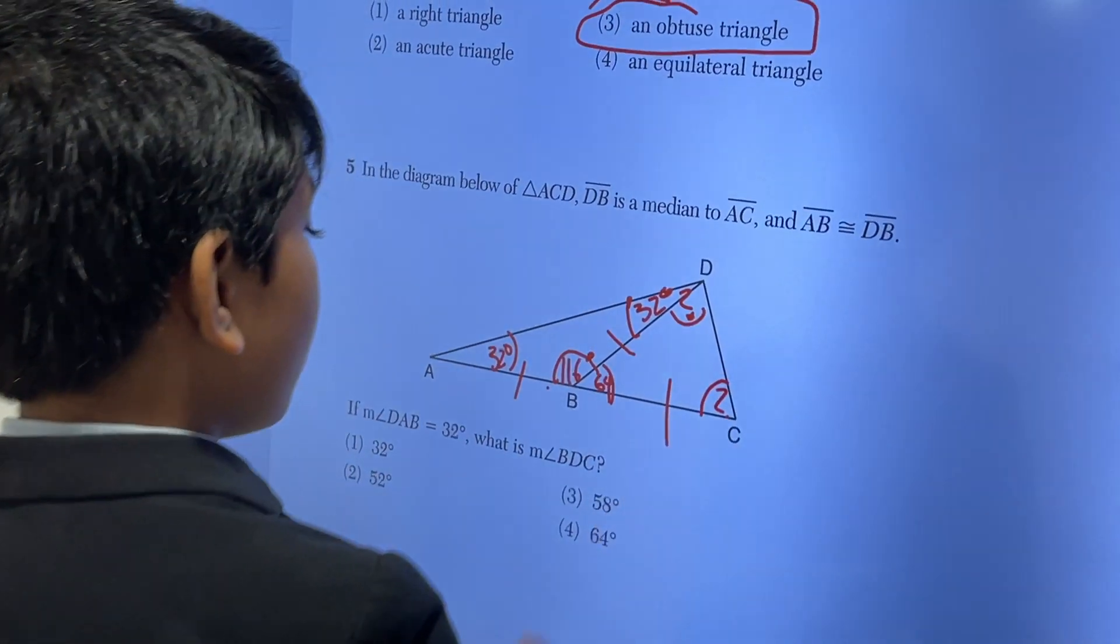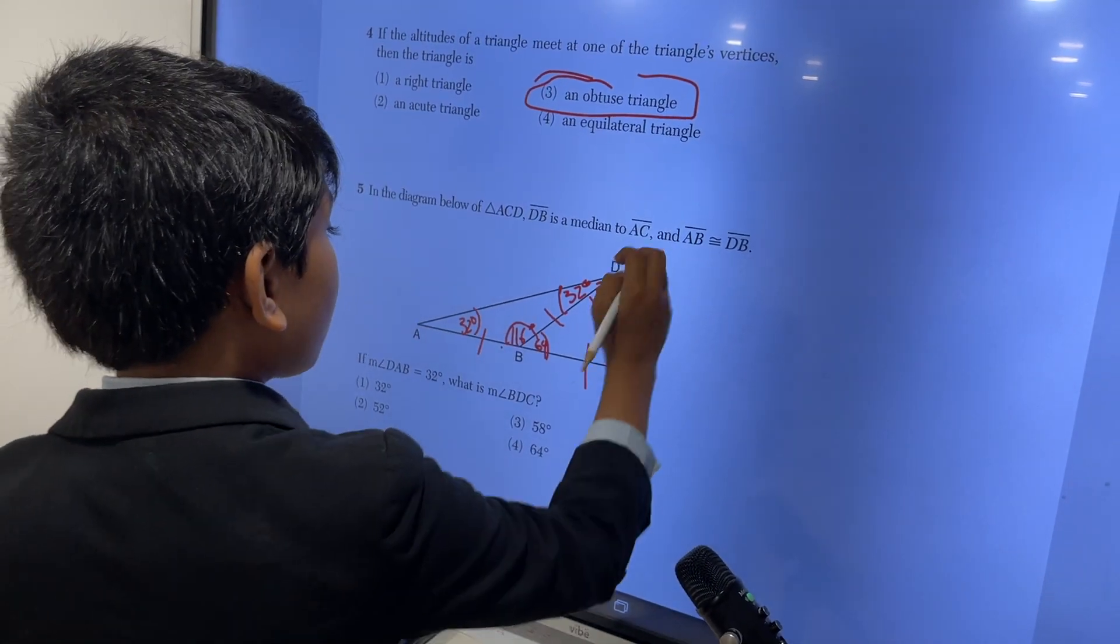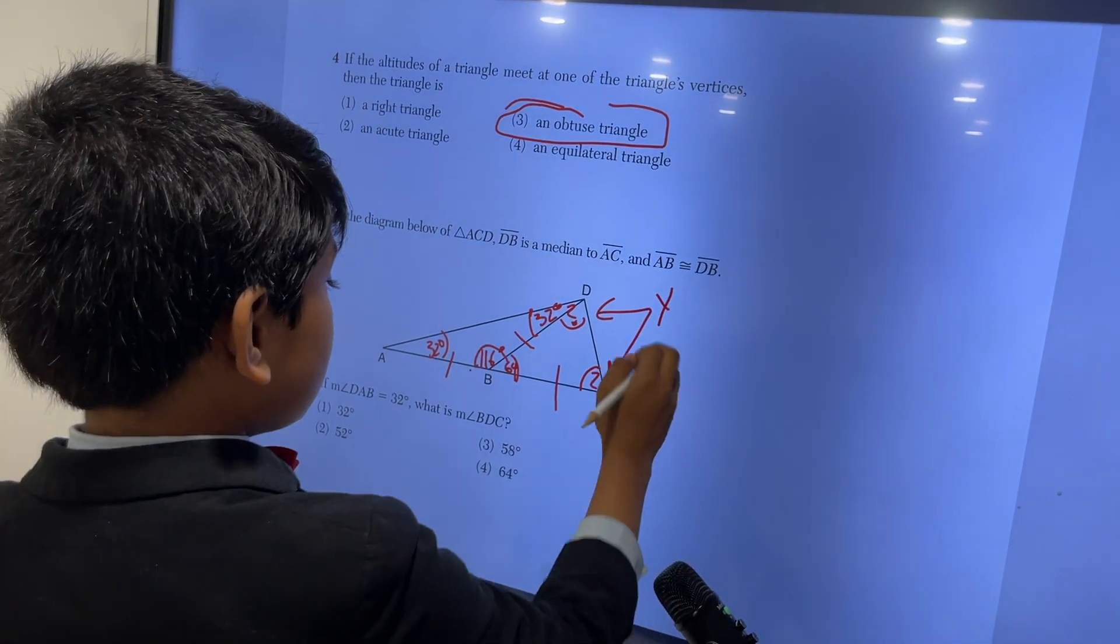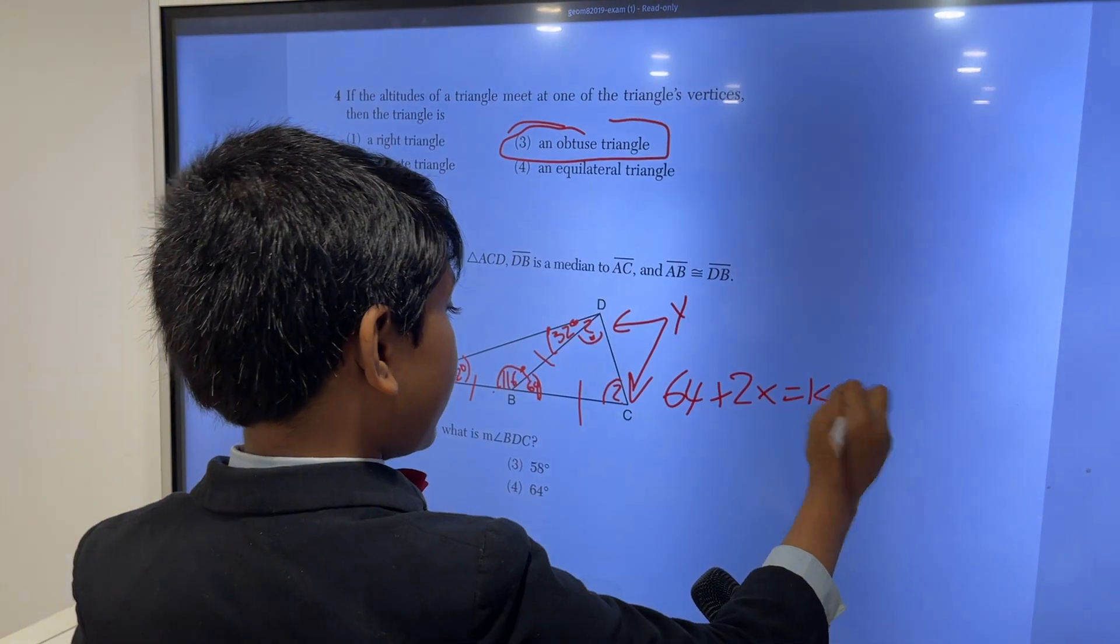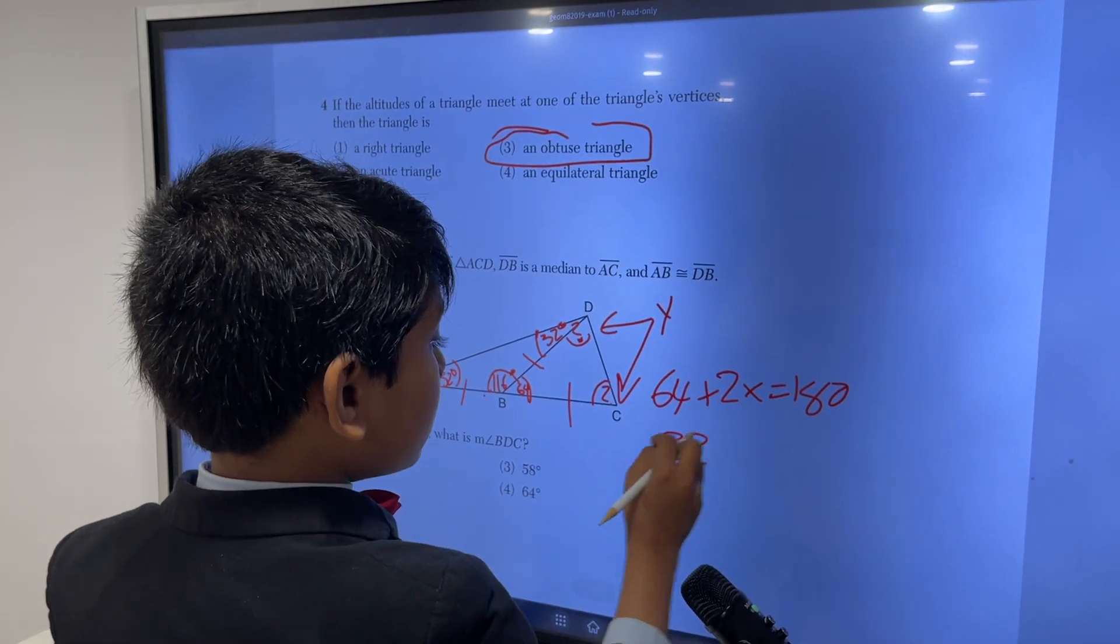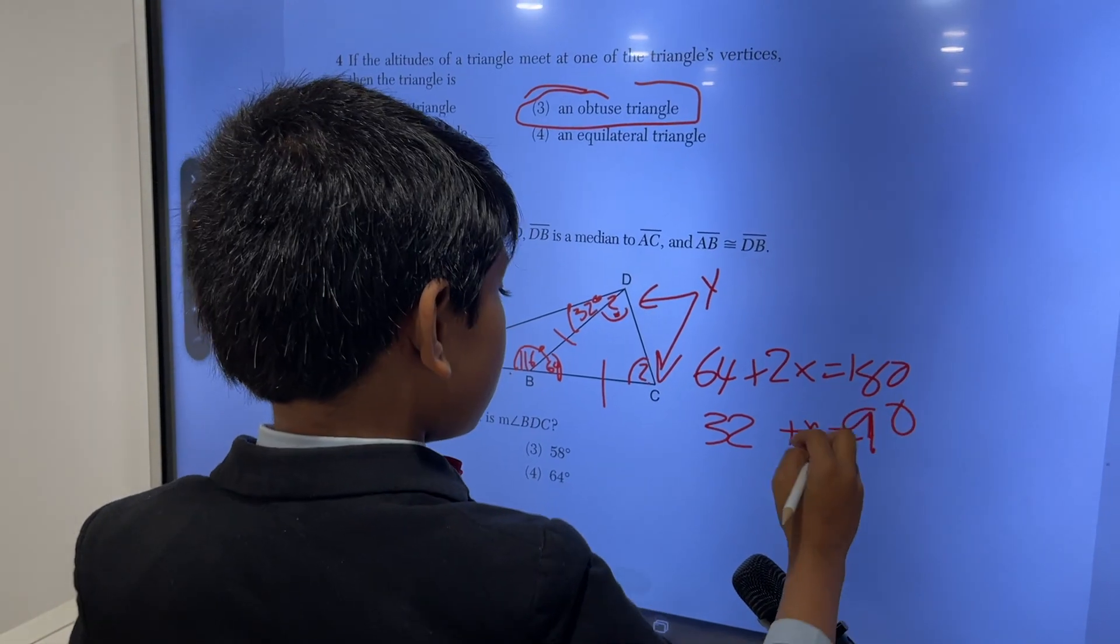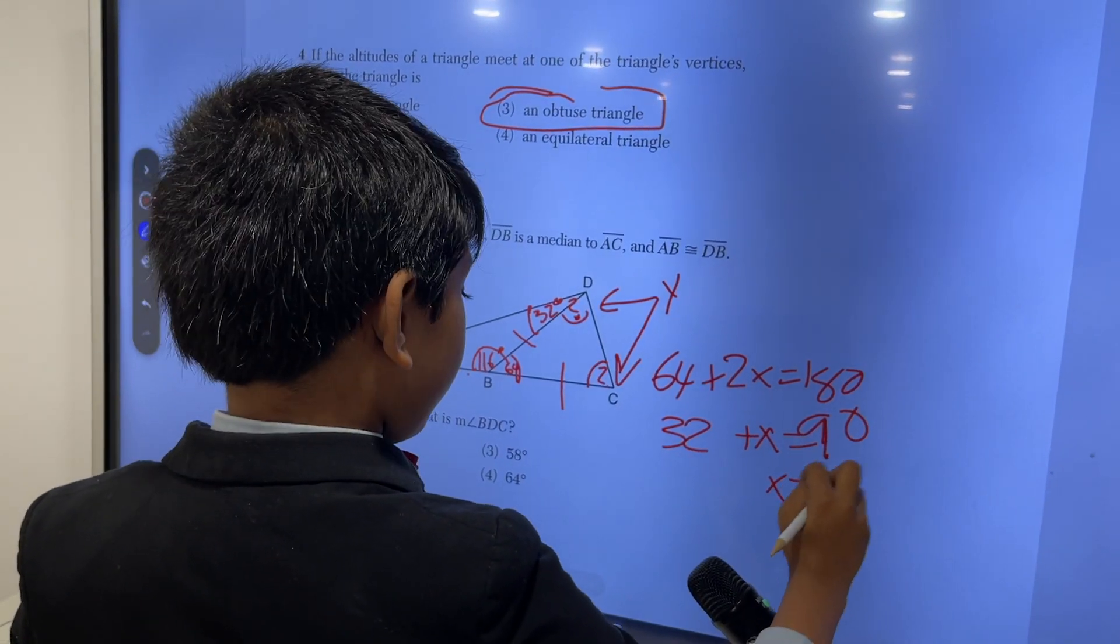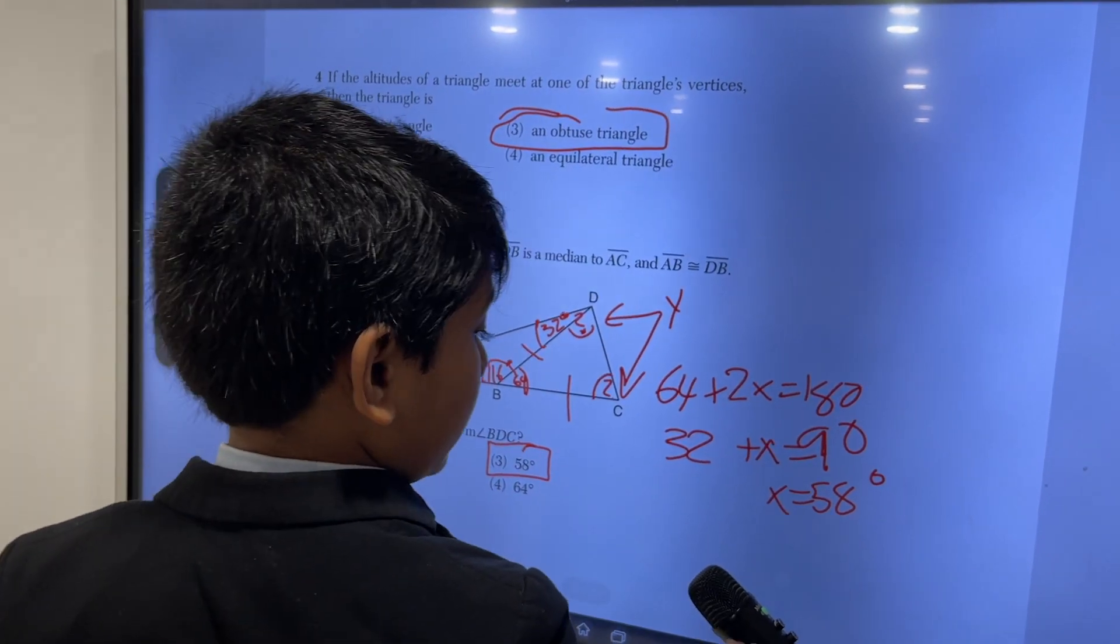So now 64, and now these two, BDC and BCD, are the same. I'm going to refer to their measures as X. So 64 plus 2X must be equal to 180. So dividing by 2, 32 plus X is 90. So that would be X equals 58 degrees. So 5 is 3.